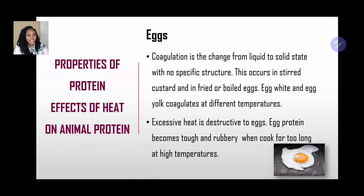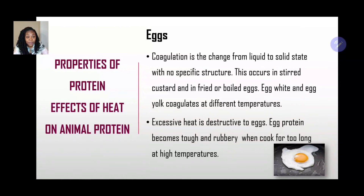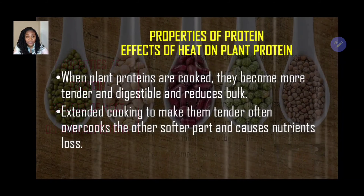For eggs: coagulation is the change from liquid to solid state with no specific structure. This occurs in stirred custard and in fried or boiled eggs. Egg white and egg yolk coagulate at different temperatures. Excessive heating is destructive — egg protein becomes tough and rubbery when cooked too long at high temperatures. If overcooked, syneresis takes place and the product becomes tough and hard to digest.